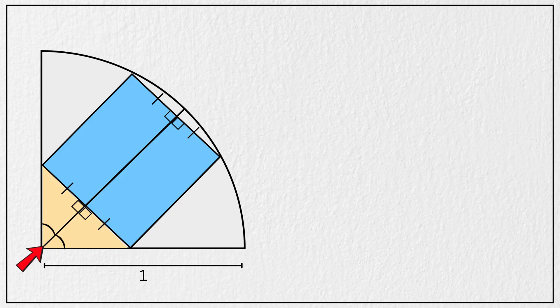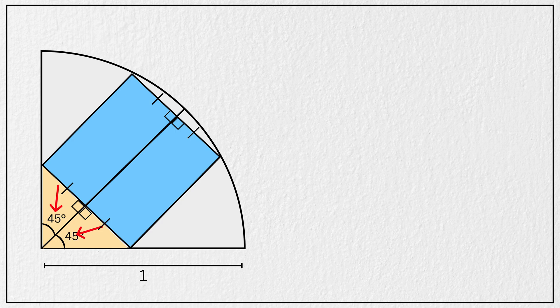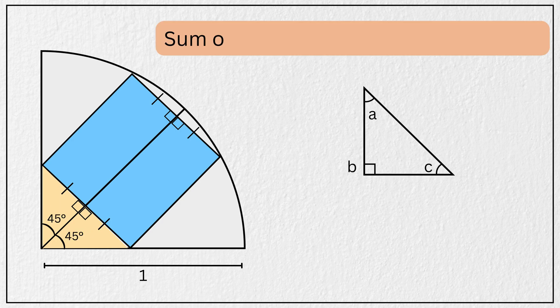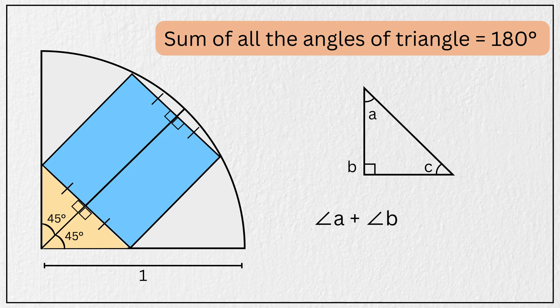And these two base angles at the bottom of the quarter circle must be equal. And as this full angle here is a right angle, both of these angles must be 45 degrees each. We know that sum of all the angles of triangle is equal to 180 degrees. That means these two angles are also 45 degrees.